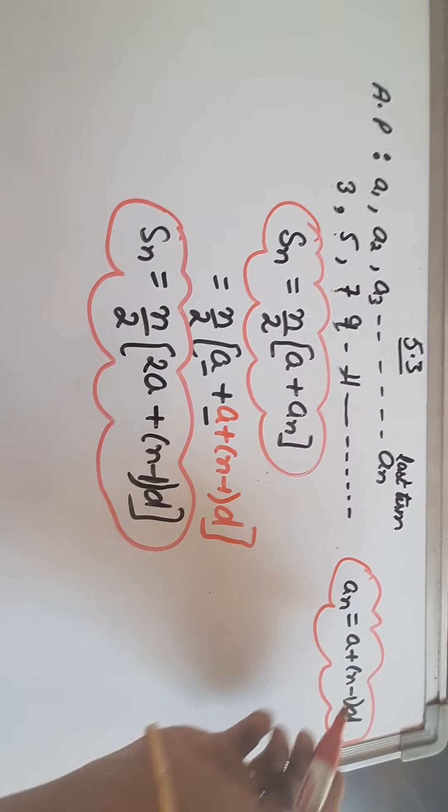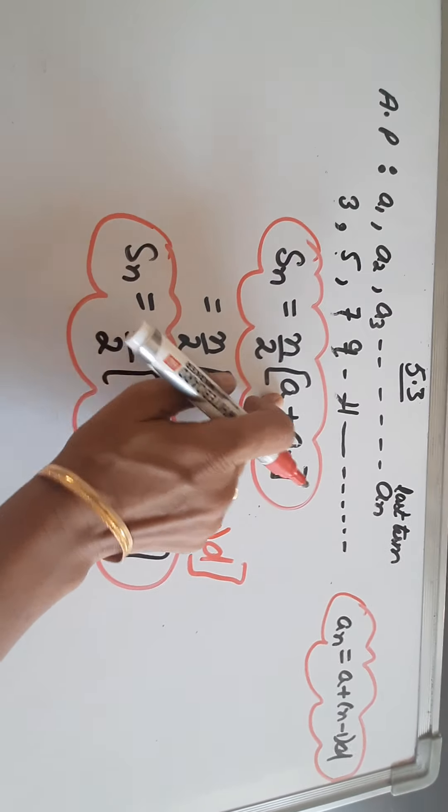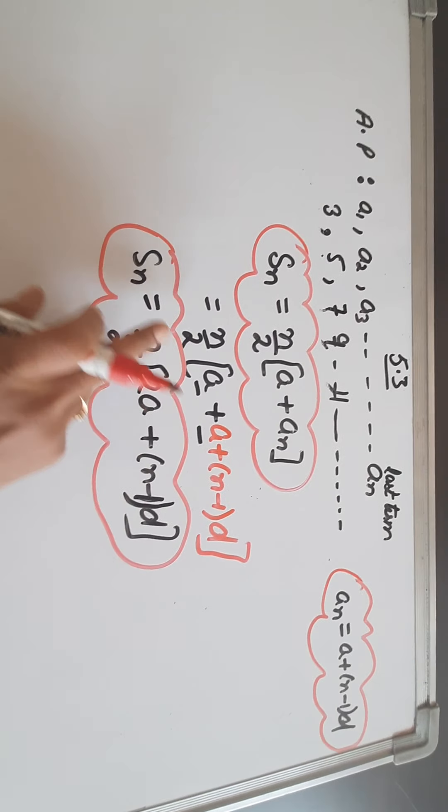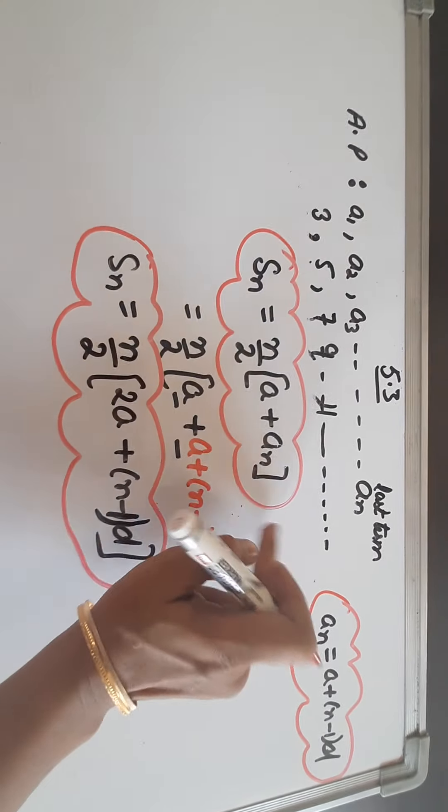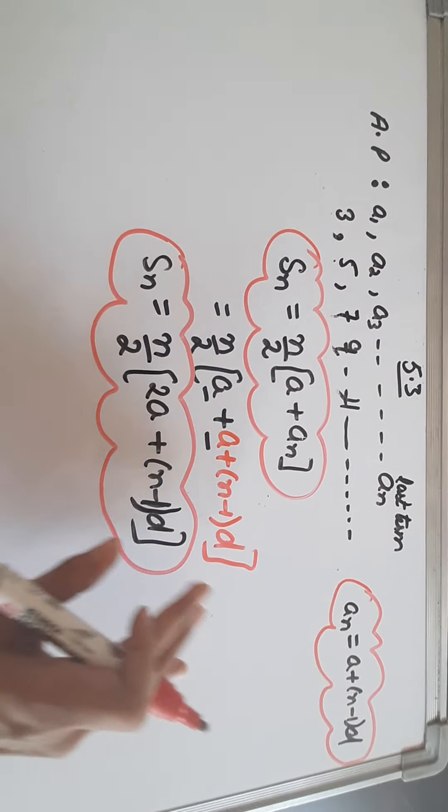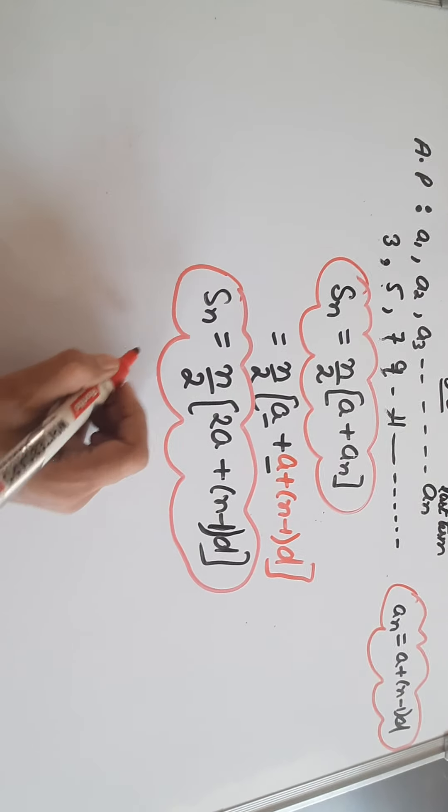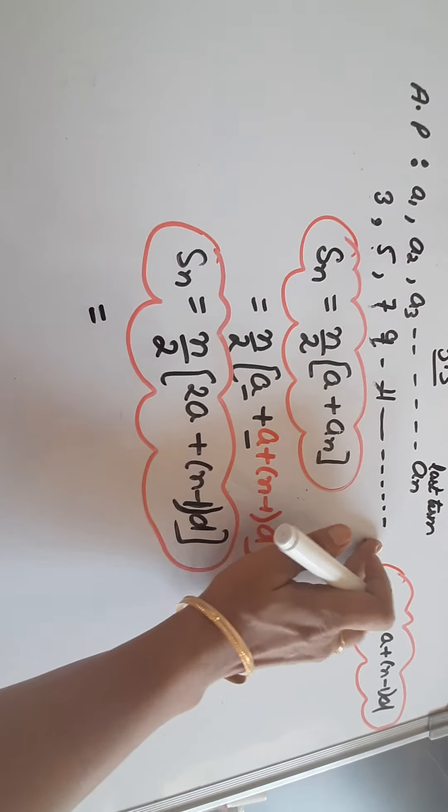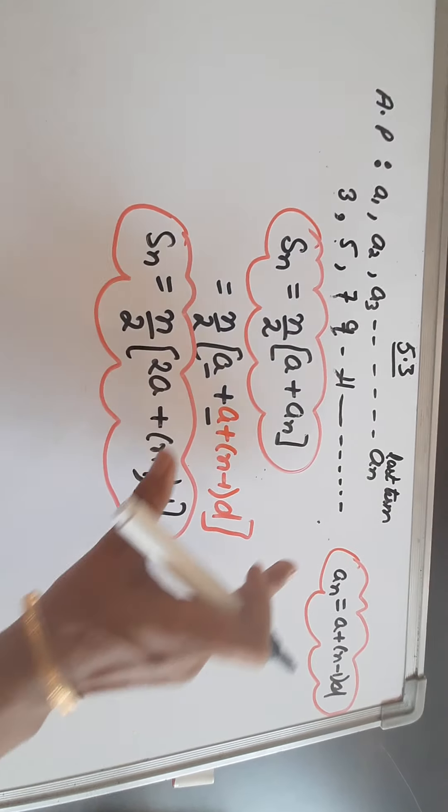But if the last term is not given to you, if we don't have AN value, we have another formula which is both the same, but how do we expand this: N by 2 into A plus AN. AN ka formula is A plus N minus 1 into D, so we can write N by 2 into 2A plus N minus 1 into D. This formula can be applied whether it is finite or infinite AP, but the other formula can only be used if last term is given to us.